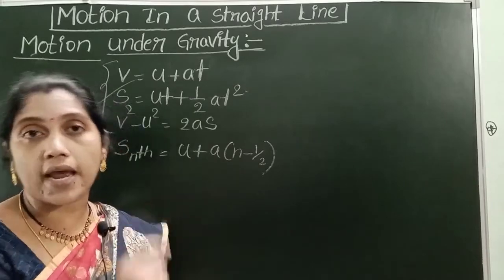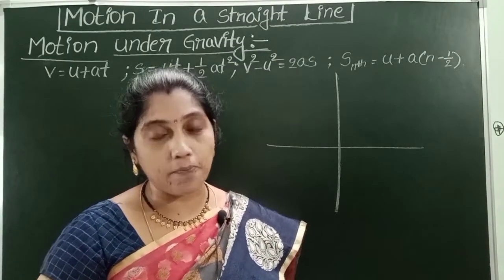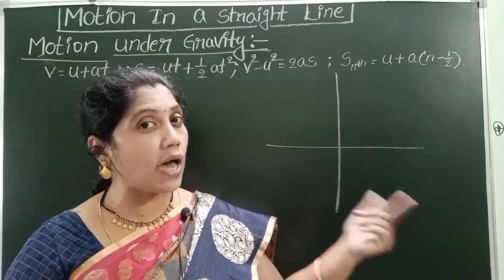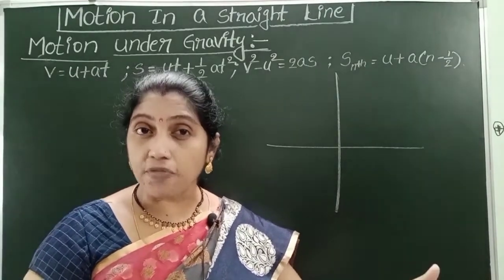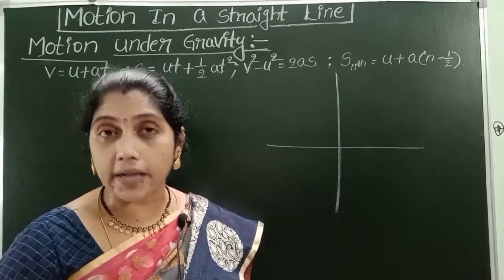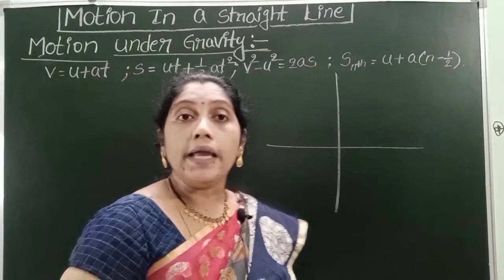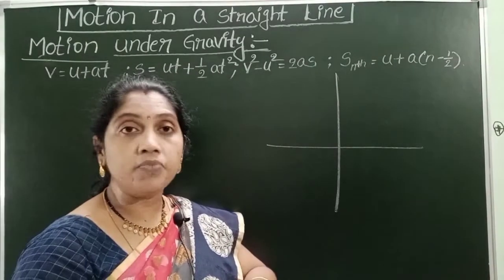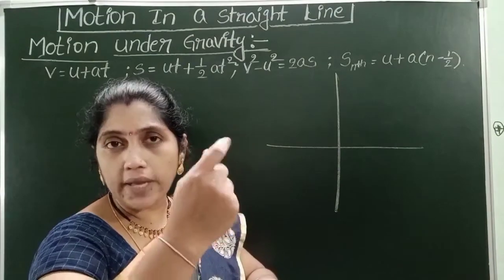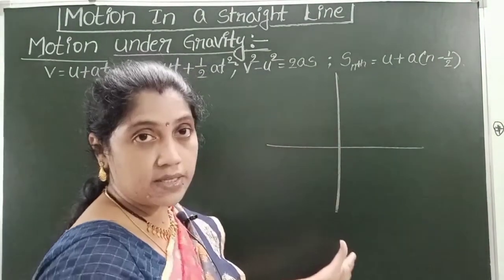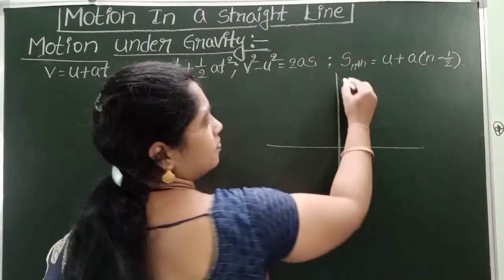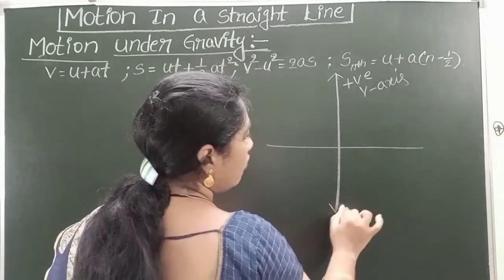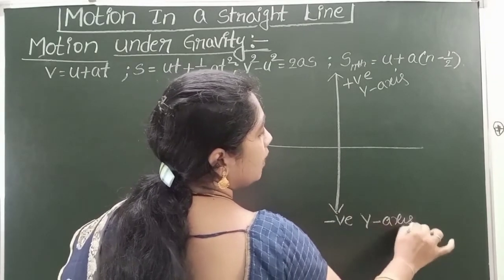When a body is projected in upward direction, what is the sign of acceleration due to gravity — positive or negative? When a body is in free fall, what about the direction of G? In physics, plus and minus only represent direction. This is one-dimensional motion, so we need a vertical axis — let it be the Y axis. In the upward direction, positive Y axis; in the downward direction, negative Y axis.